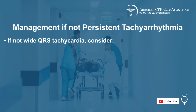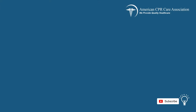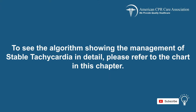If it is found not to be wide QRS tachycardia, then consider vagal maneuvers, adenosine, beta blockers, and calcium channel blockers. To see the algorithm showing the management of stable tachycardia in detail, please refer to the chart in this chapter.